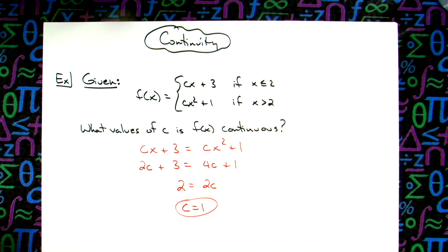So when c is equal to 1, then this function, this piecewise function, is continuous. So it's a pretty straightforward type question as long as you know how to approach it, and these type of questions usually show up in a beginning calc 1 class.